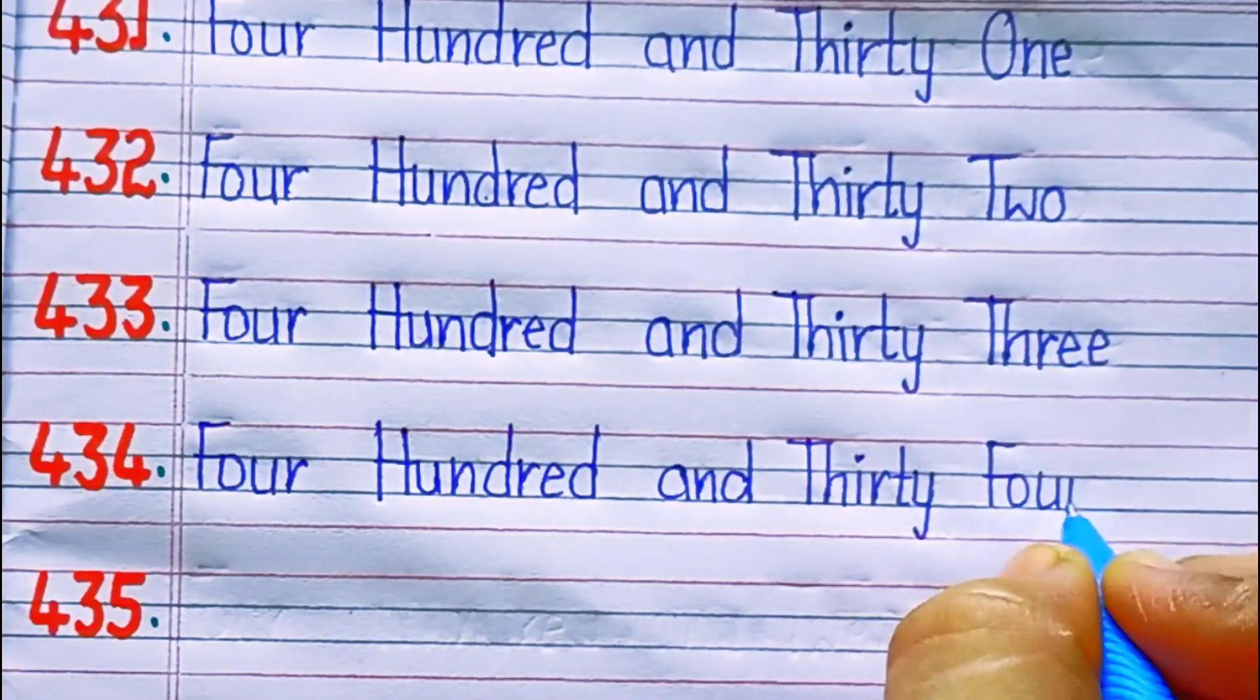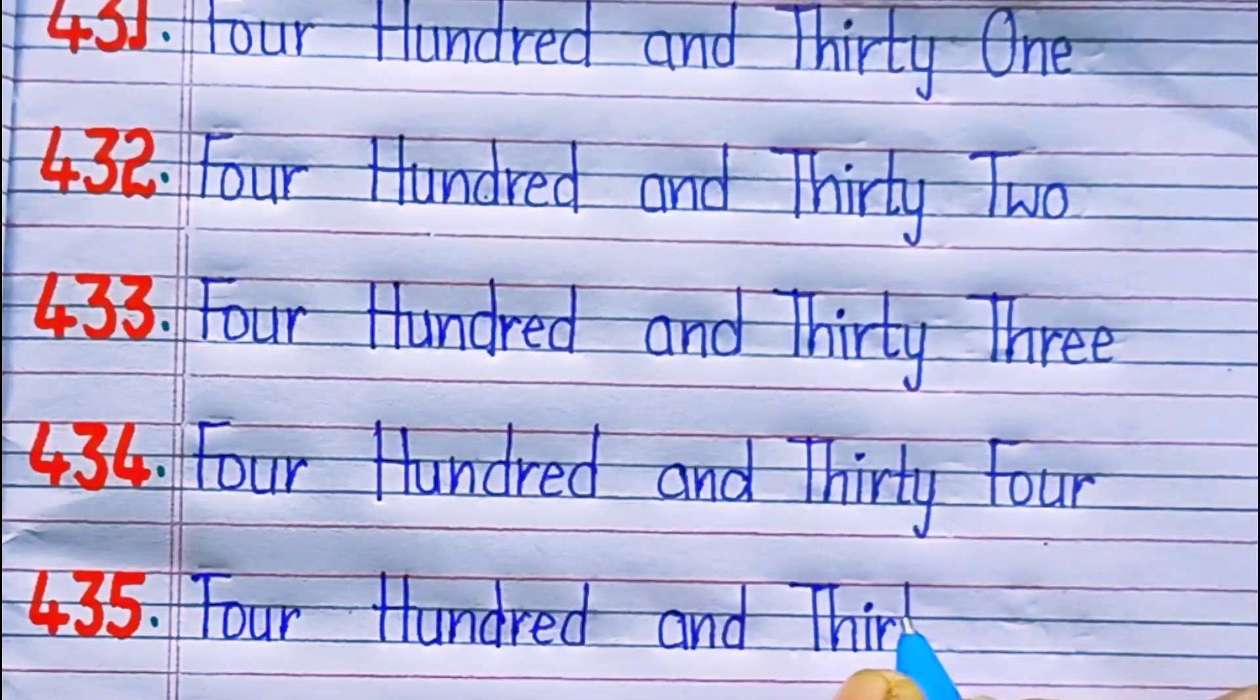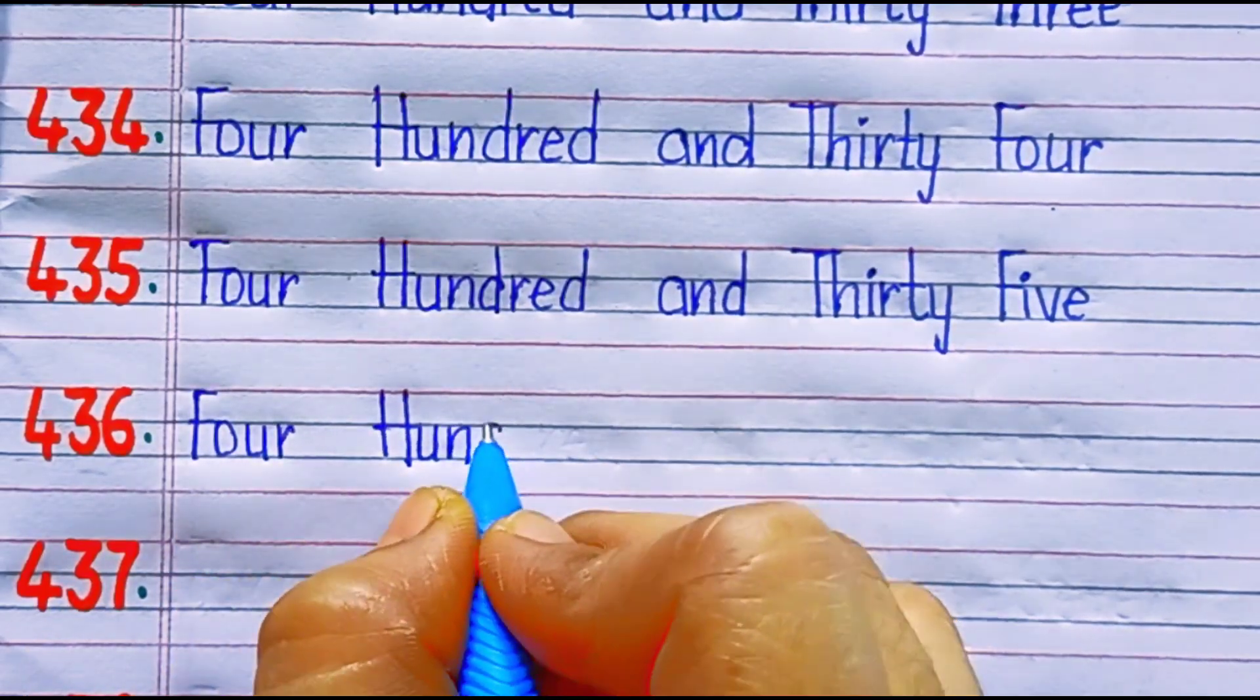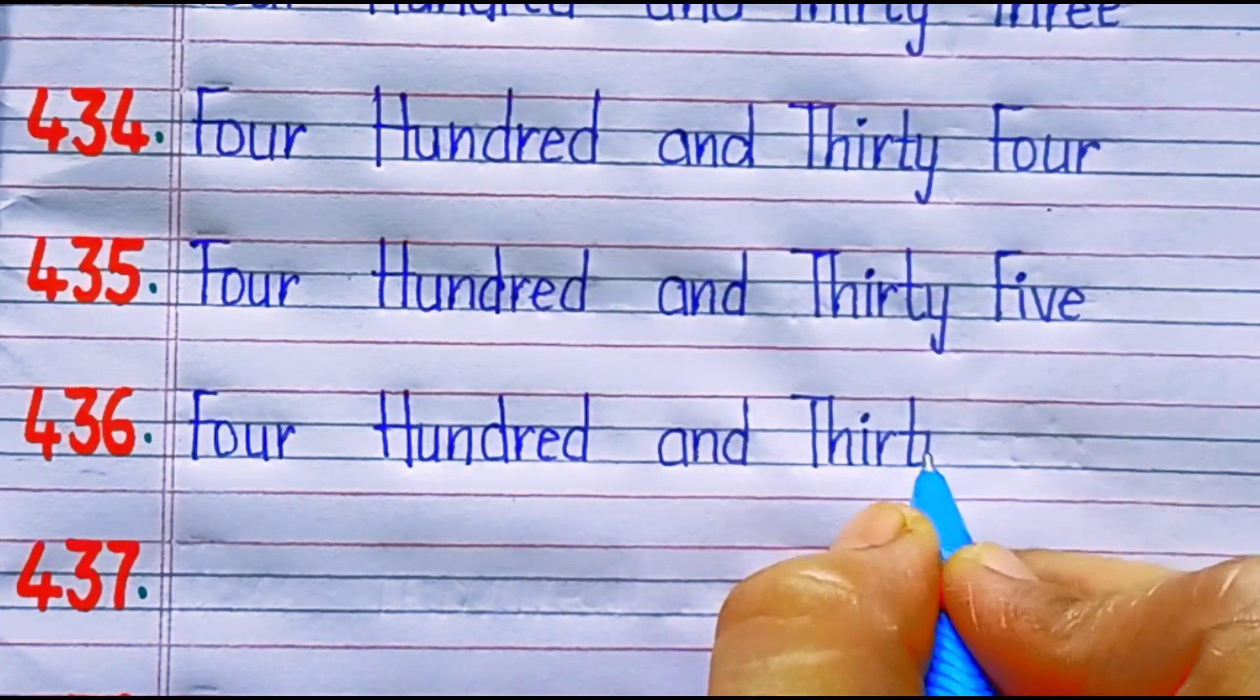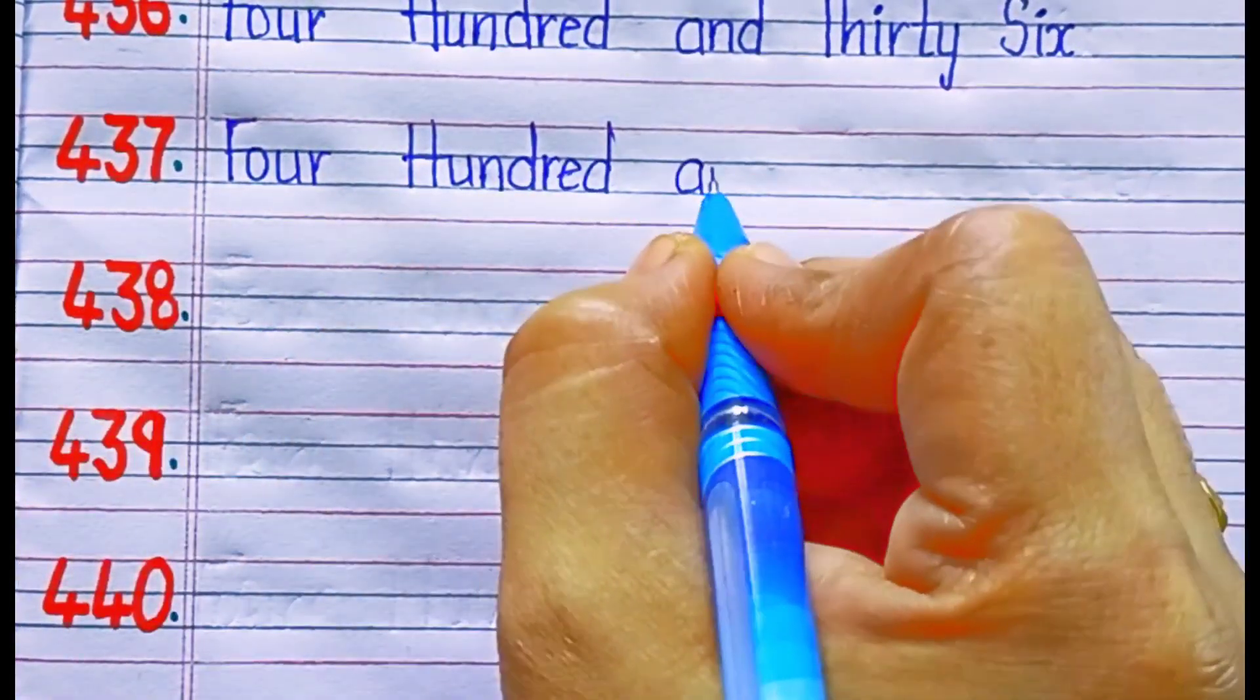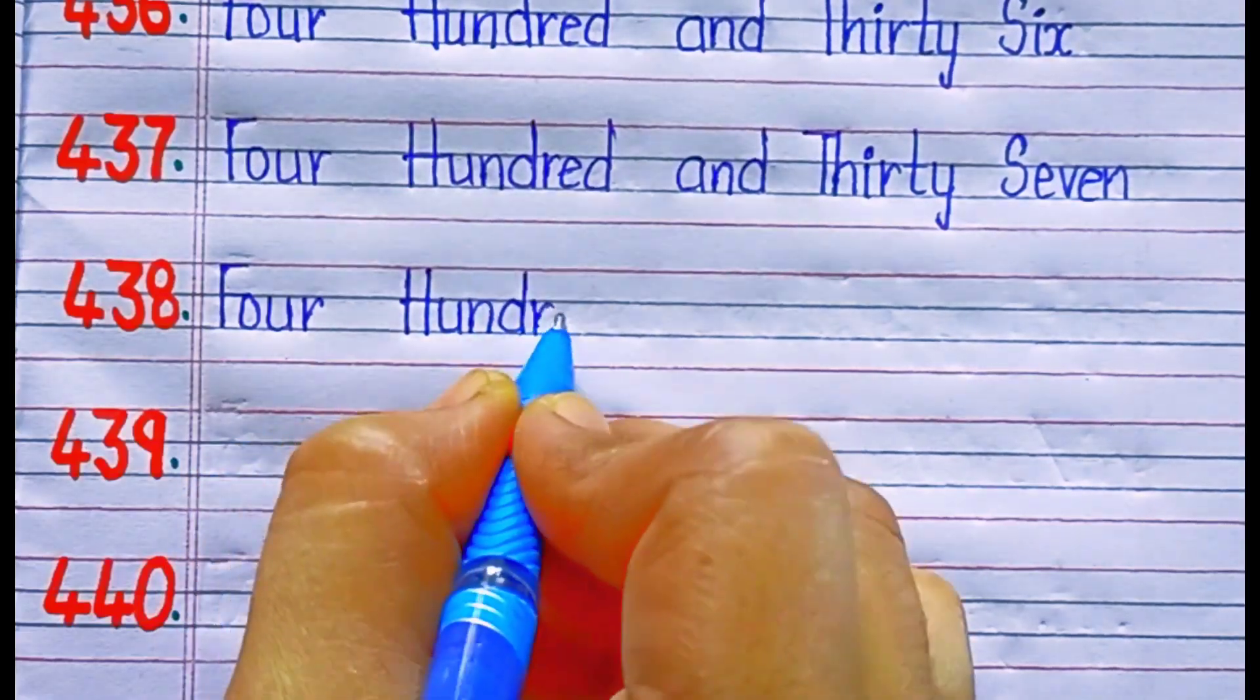Four three five, four hundred and thirty-five. Four three six, four hundred and thirty-six. Four three seven, four hundred and thirty-seven. Four three eight, four hundred and thirty-eight.